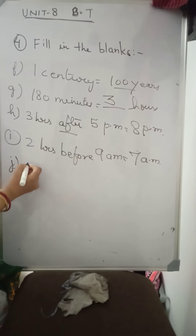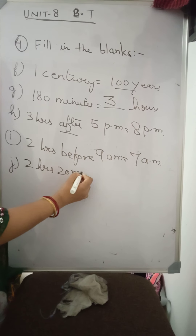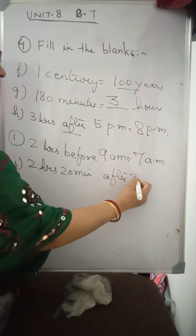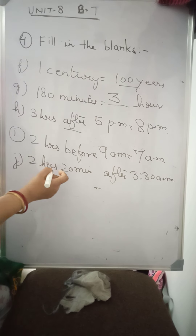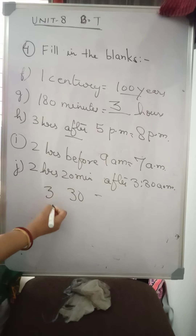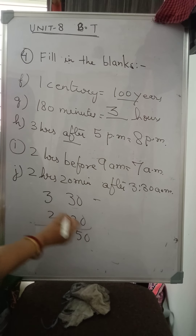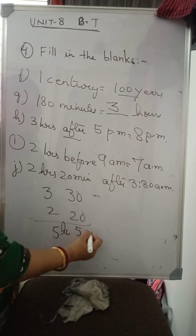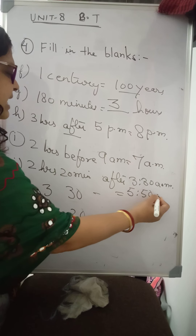Now J: Two hours twenty minutes after three thirty a.m. Add three hours thirty minutes and two hours twenty minutes. Thirty plus twenty is fifty, three plus two is five. So it is five hours fifty minutes — that is five fifty a.m.